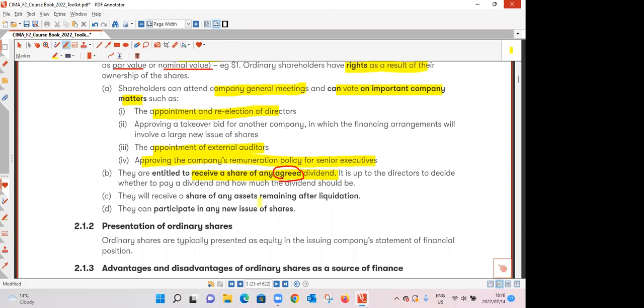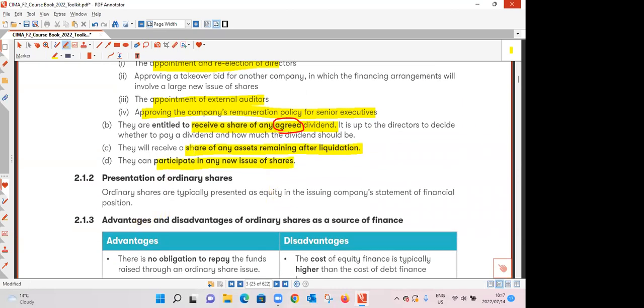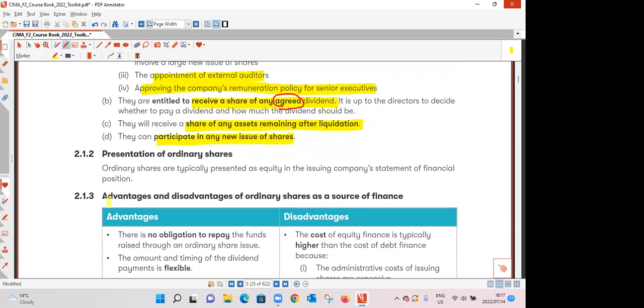Another characteristic of ordinary shares is the fact that ordinary shareholders being owners of the company they have rights to their share of any assets that remain after liquidation. In other words they have rights to the net assets of a company after deducting all its liabilities. Ordinary shareholders also are entitled to participate in any new issue of shares even though it's not compulsory for them to do so. Where are these ordinary shares presented in the financial statement? You will find them in the balance sheet or the statement of financial position and they are presented as equity.